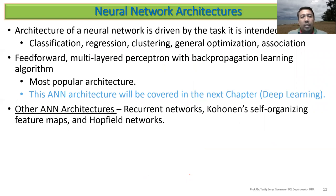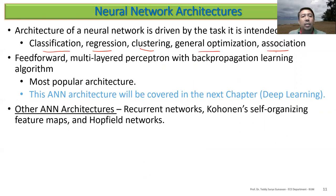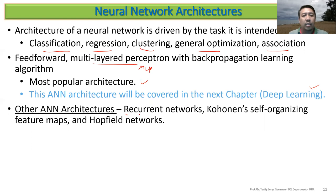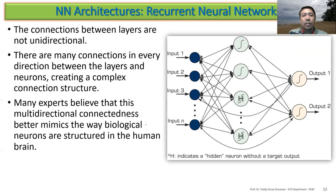The architecture of a neural network is driven by the task it is intended for — classification, regression, clustering, optimization, or association. The feed-forward or multi-layer perceptron (MLP) with backpropagation and a learning algorithm is the most popular architecture, and will be discussed more in the next chapter. Other architectures include recurrent networks, Kohonen self-organizing feature maps, and Hopfield networks.